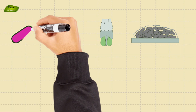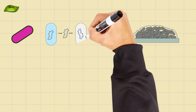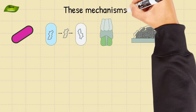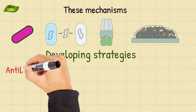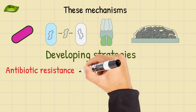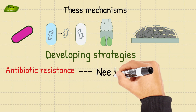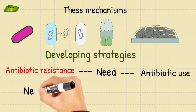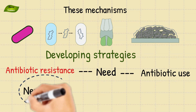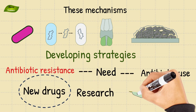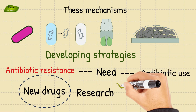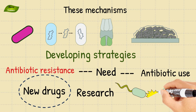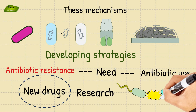Understanding these mechanisms is crucial for developing strategies to combat antibiotic resistance. It highlights the need for responsible antibiotic use, the development of new drugs, and ongoing research to stay ahead in the ongoing evolutionary arms race between bacteria and antibiotics.